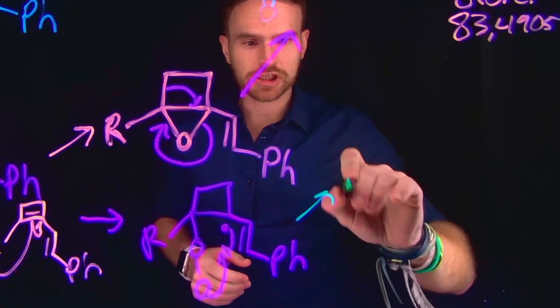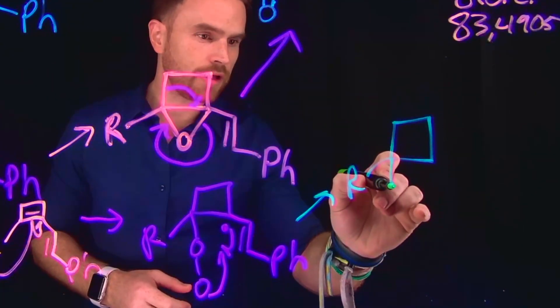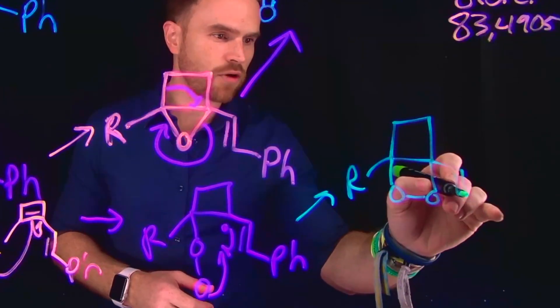And the product of this transformation looks exactly as I described, where we still have our cyclobutane ring. And now we have a new four-membered ring at this position with the rest of our molecules still remaining.